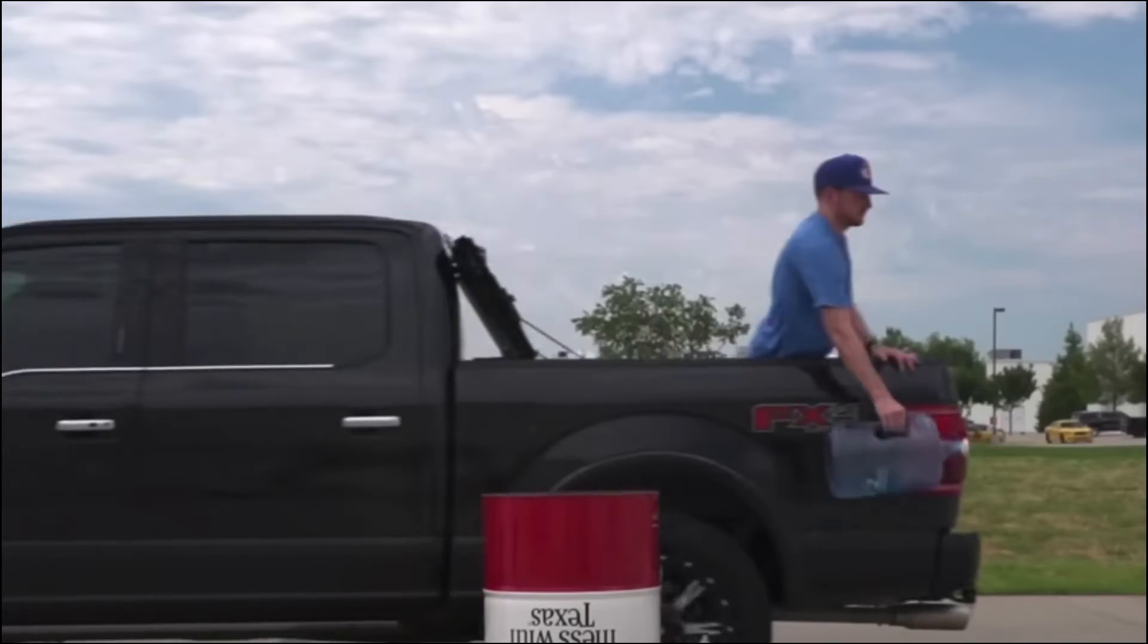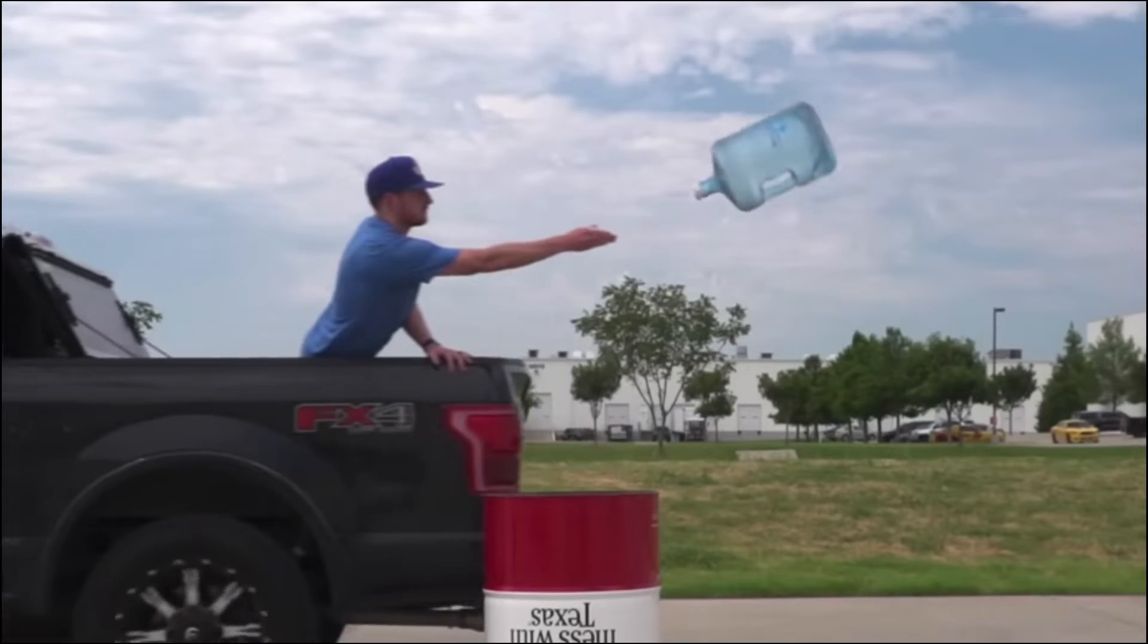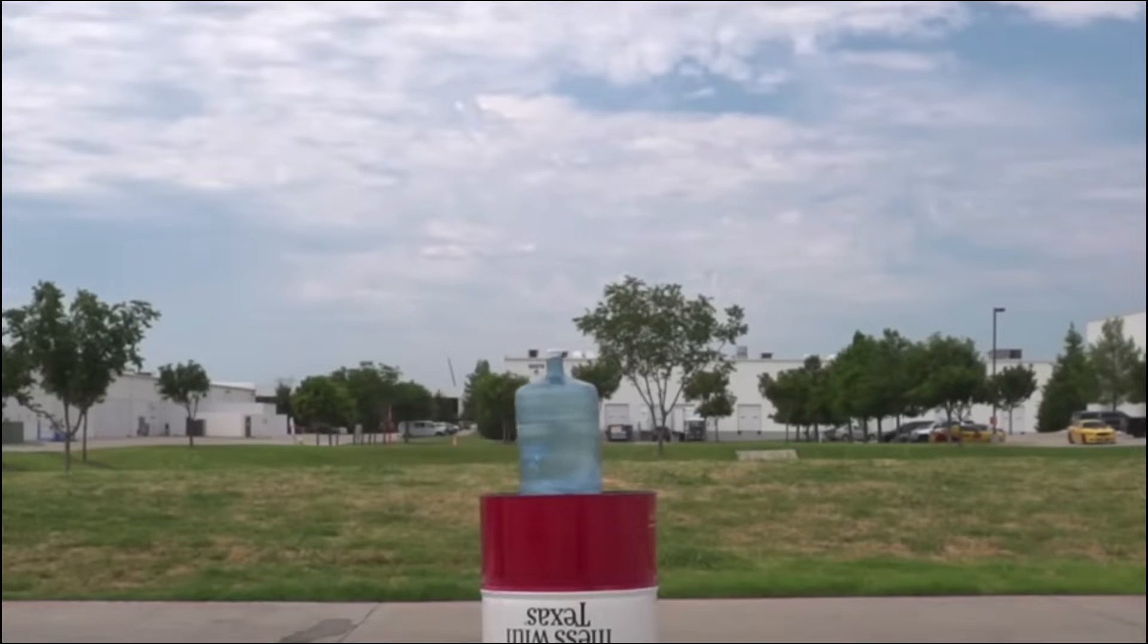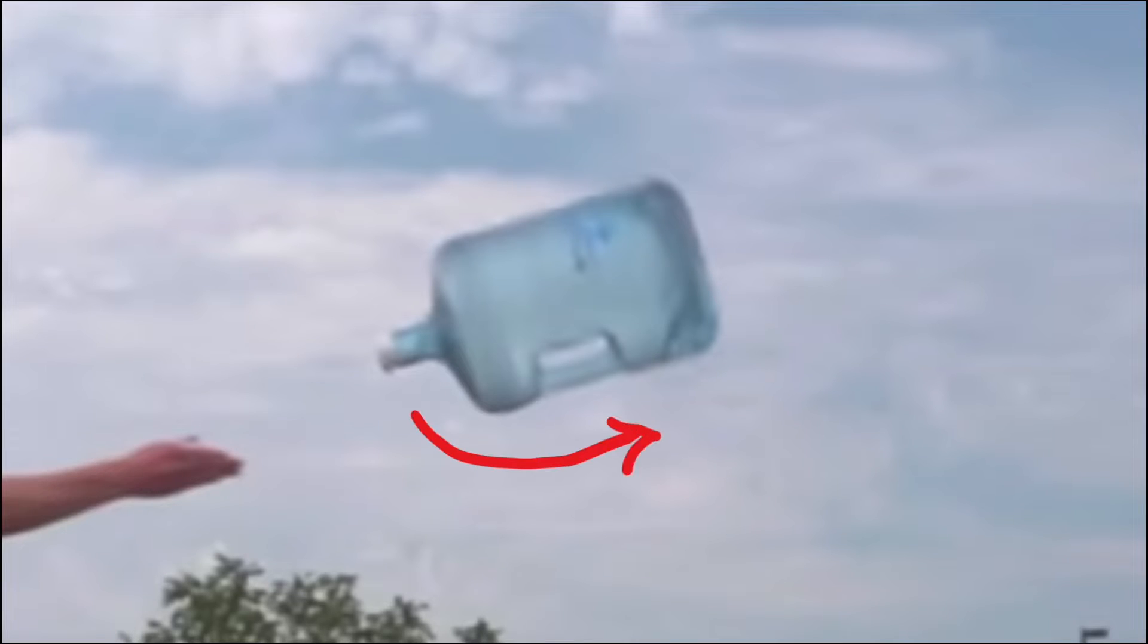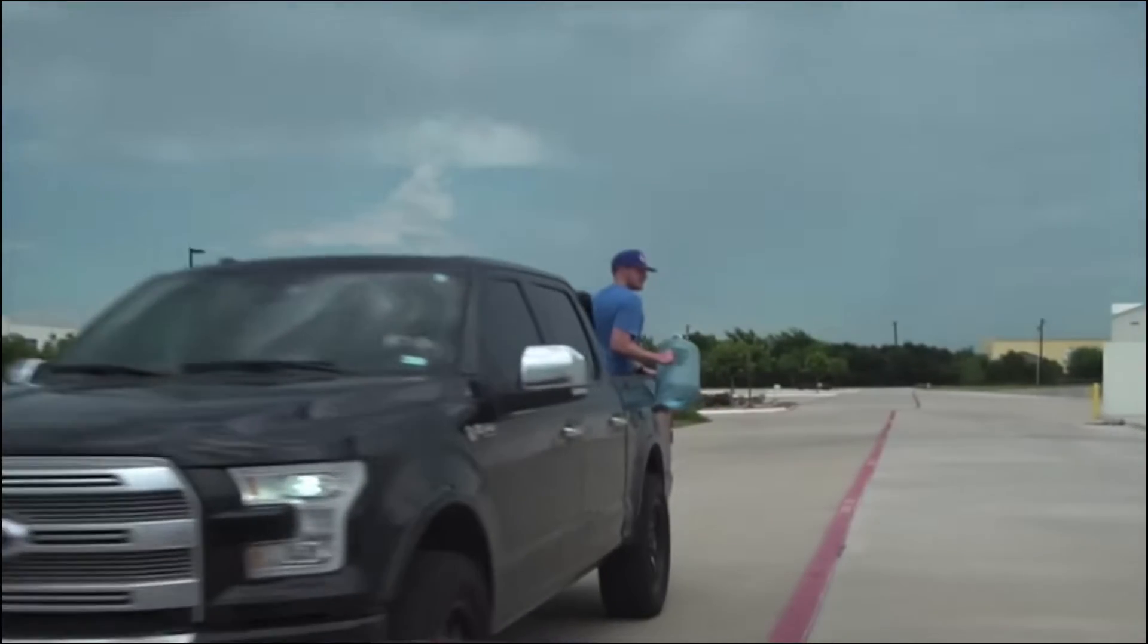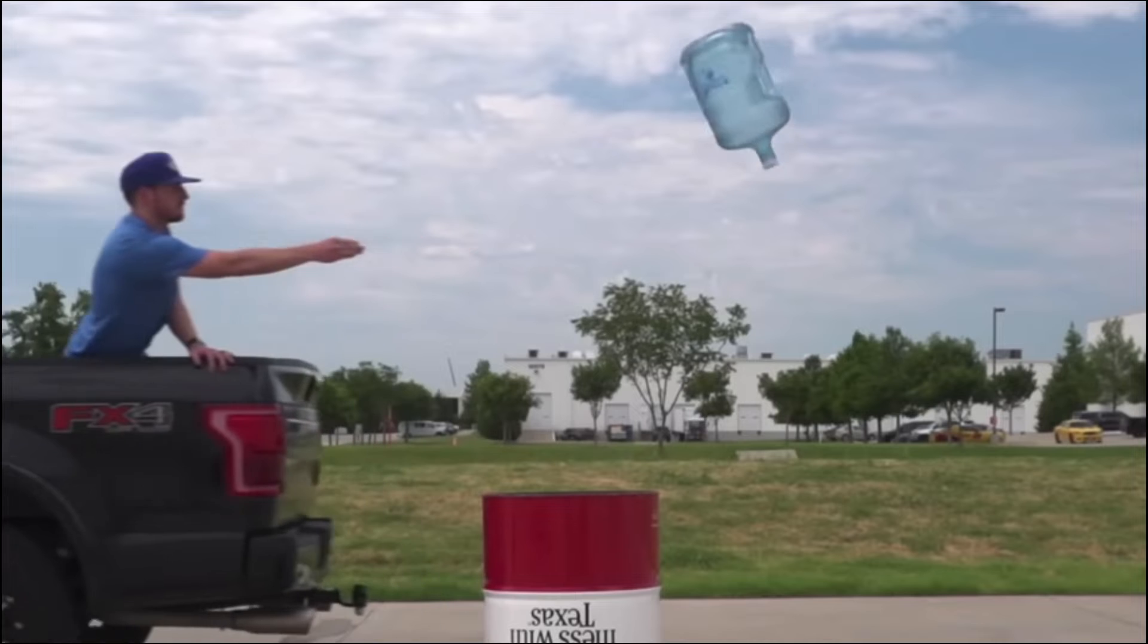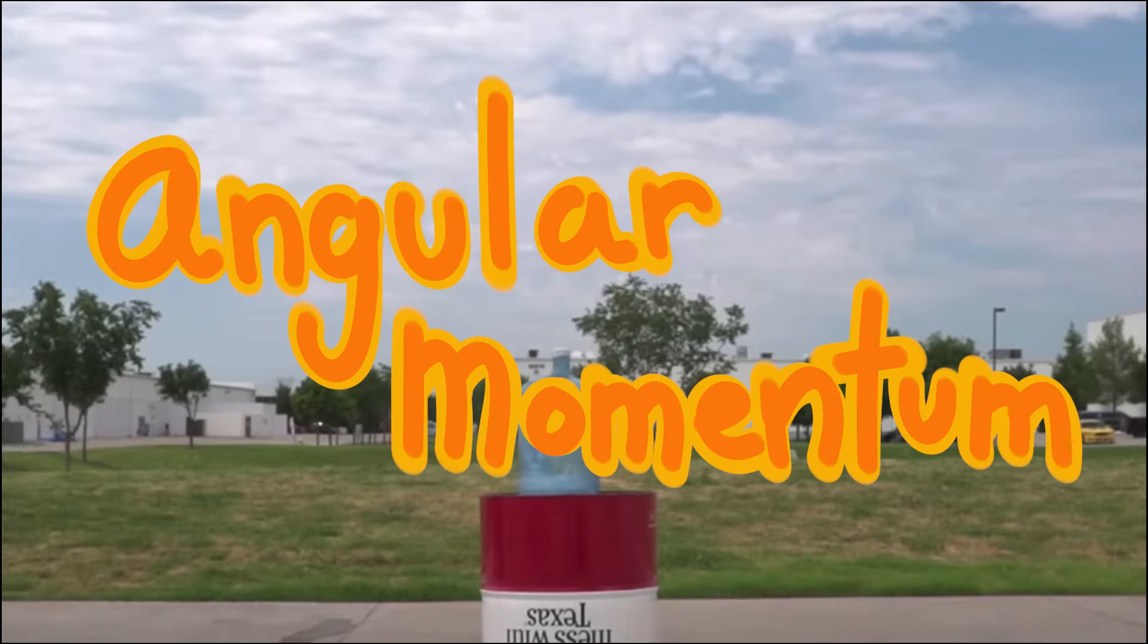The second reason is that the water slows the rotation of the bottle. When you first start to spin the bottle on a flip, the bottle spins pretty fast. But the bottle is spinning around the liquid water. It takes some time for the rotation of the bottle to get the water rotating as well. Since the water is heavier than the bottle, when it rotates, it slows down the rotation of the bottle. In physics, this is called conservation of angular momentum.